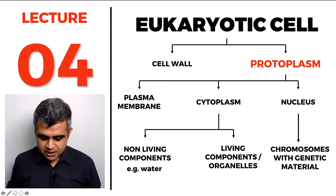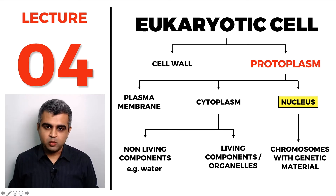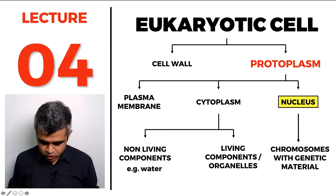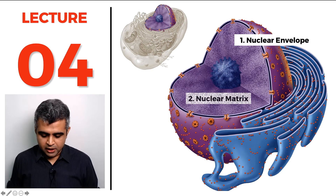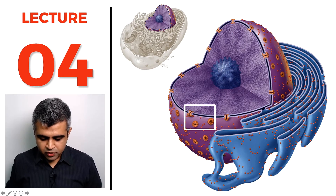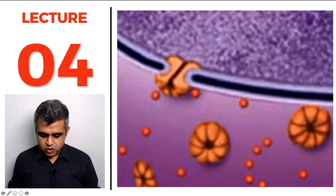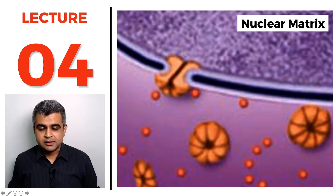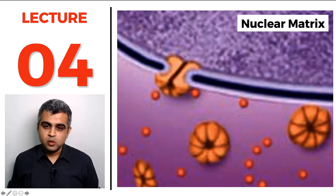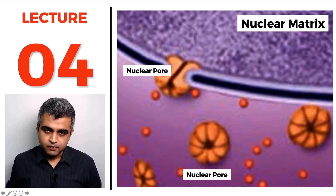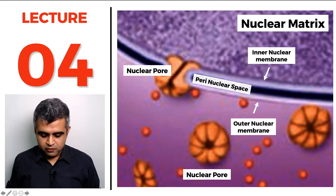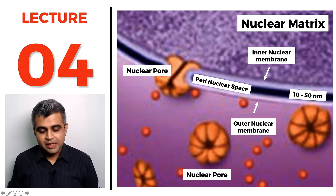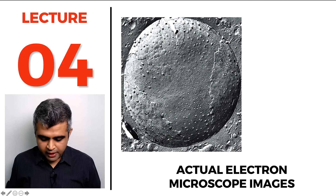In lecture four, we saw that the animal cell's nucleus has a nuclear envelope and a nuclear matrix. Magnifying the nuclear envelope, we found that whatever is inside is called the nuclear matrix or nucleoplasm. The nuclear envelope has multiple nuclear pores, an outer nuclear membrane, and an inner nuclear membrane, with the perinuclear space of about 10 to 50 nanometers in between.